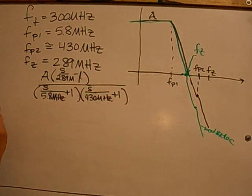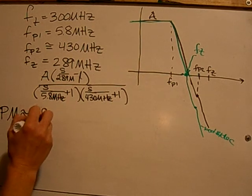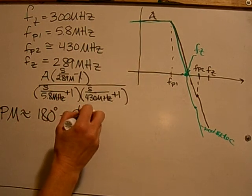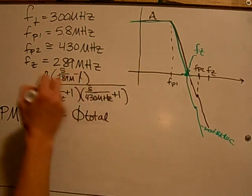So to find the phase margin, we can still approximate it as 180 degrees minus the total from this equation.